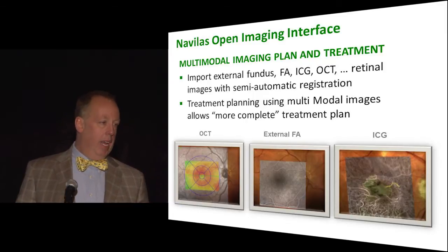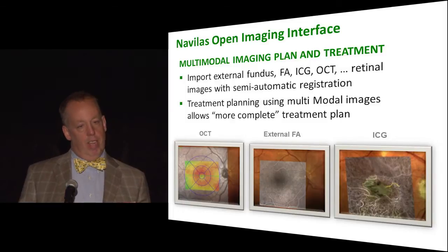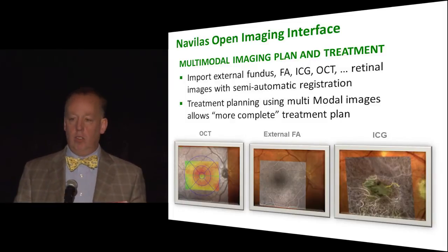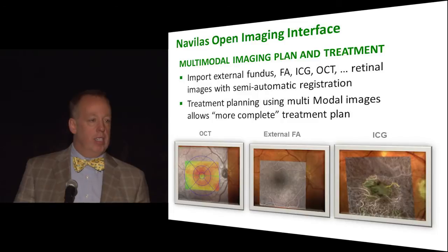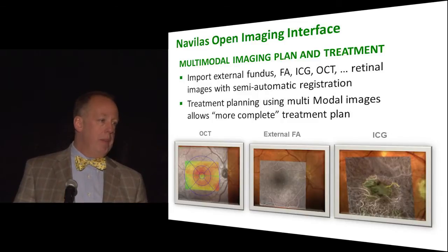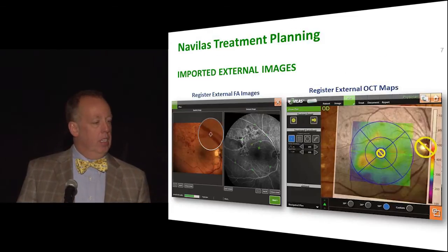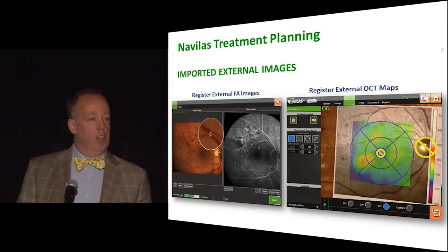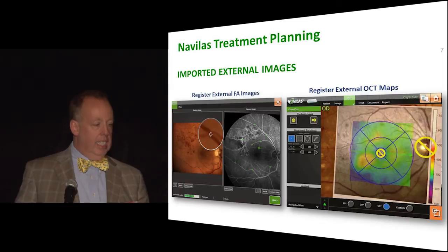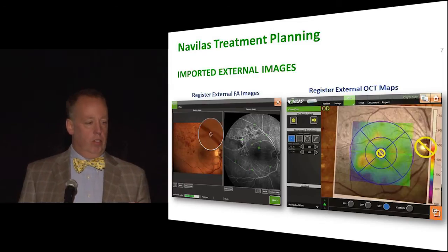As our OCTs get better, you're actually going to be able to identify micro aneurysms and vascularization on OCT transverse sections — particularly on the new Heidelberg transverse cuts — so you may be able to plan without the fluorescein angiogram, just based on your OCT. Peter has shown how you can overlay pictures of the OCT and then proceed with focal laser.